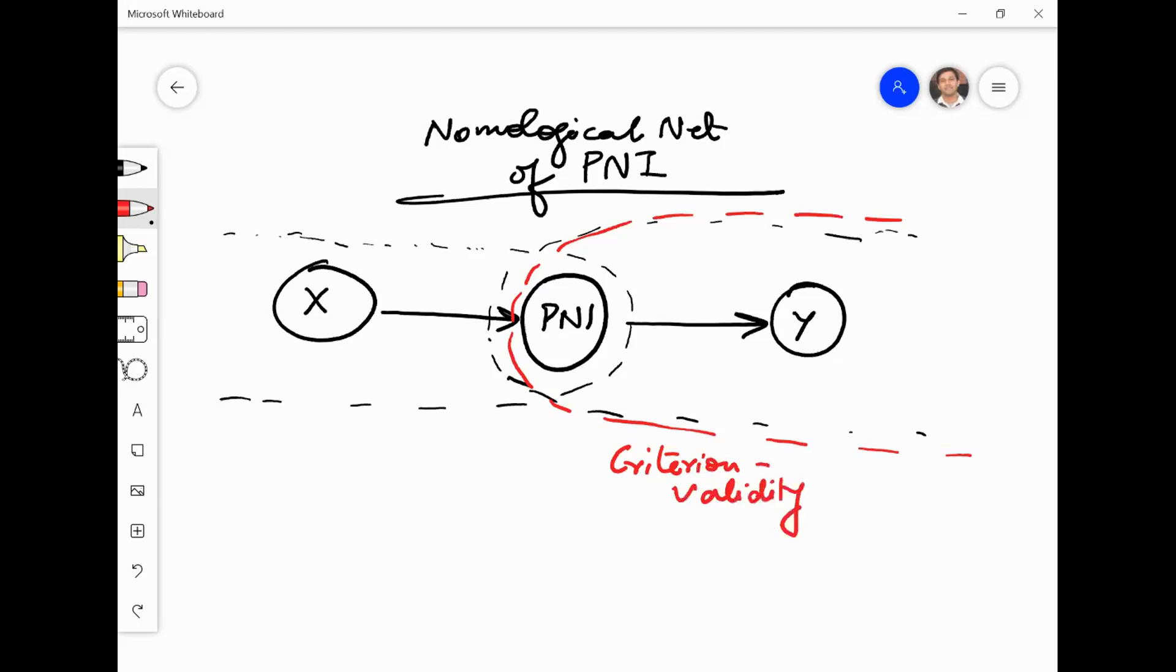This part which I have just shown here, this part is also the criterion validity part, because you are showing that your construct is actually related to an outcome variable into a particular outcome. So nomological validity, ideally you should show it with an antecedent and a consequent. It shows what is nomological net, it is nothing but it is just depicting how your construct is related to other constructs, and you show these, you test these relationships.